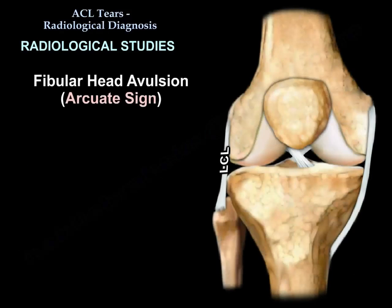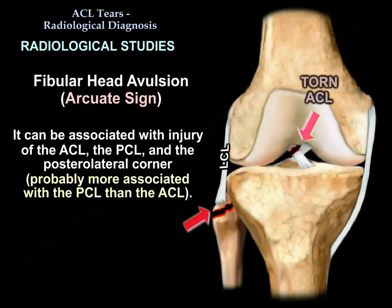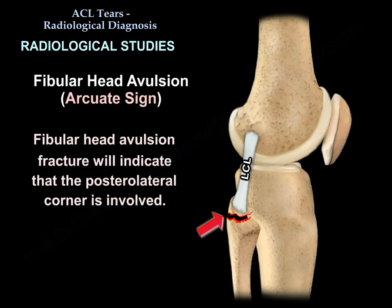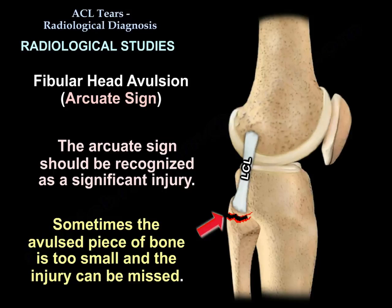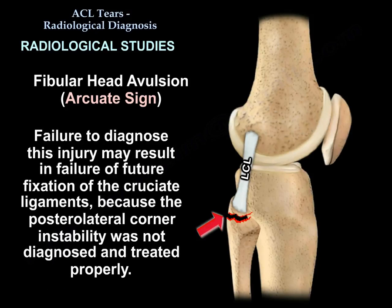The arcuate fracture is a horizontally oriented fracture of the fibular styloid process — the attachment site of the arcuate ligament complex. It can be associated with injury of the ACL, the PCL, and the posterolateral corner, though it is probably more associated with PCL than ACL. It is an avulsion of the fibular head that indicates posterolateral corner involvement. The arcuate sign should be recognized as a significant injury, as the avulsed bone piece can be small and missed. Failure to diagnose it may result in failure of future fixation of the cruciate ligaments because posterolateral corner instability was not diagnosed and treated properly.